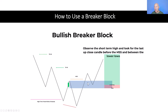We're obviously going to be waiting for price to come back into that zone. Again, the simplest way is I've used the mean threshold — the 50% level between the high and the low of the breaker candle — and that's where I'm going to put my limit buy order.